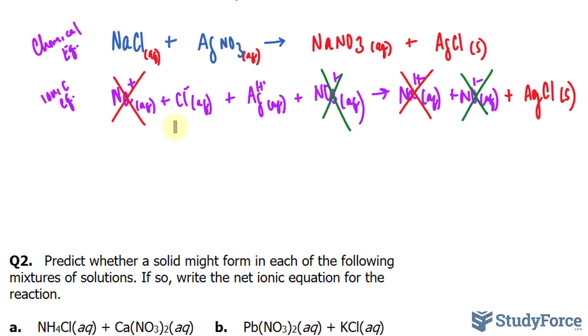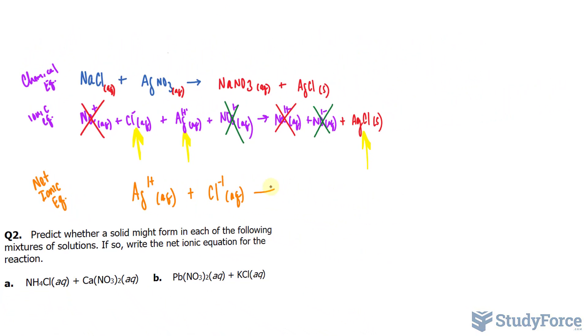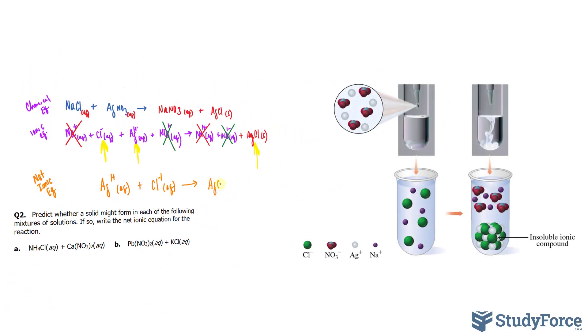We're left with these two along with this solid. Writing this out, the net ionic equation is Ag+ plus Cl-, and this forms AgCl solid state.